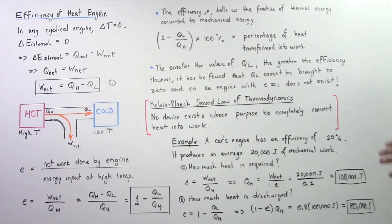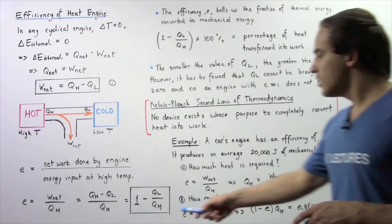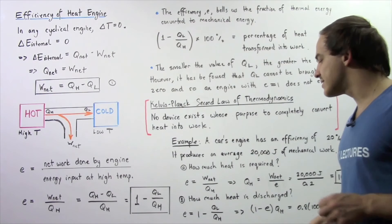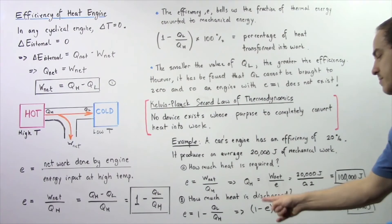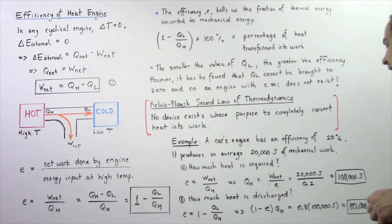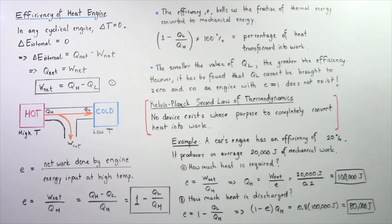In part B, how much heat is discharged? We want to calculate Q_L. Using the equation Q_H equals Q_L plus W_net, we rearrange to get Q_L equals Q_H times (1 minus E). Since 1 minus E equals 0.8 and Q_H equals 100,000 joules, we get Q_L equals 0.8 times 100,000, which gives us 80,000 joules. So 80,000 joules of heat must be discharged into the cold object, leaving us with 20,000 joules of usable work.